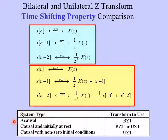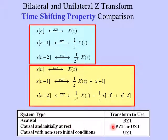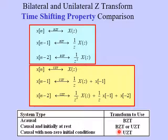When do we use the BZT and when do we use the UZT? As this table shows, if a system is acausal — the output precedes the input and we're using negative values of N — we must use the bilateral Z-transform, which is why it's been used up to this point. However, if a system is causal and initially at rest, we can use either transform. What we're doing in this section is dealing with causal systems that have non-zero initial conditions, i.e., not initially at rest. In this case, we must use the unilateral Z-transform.